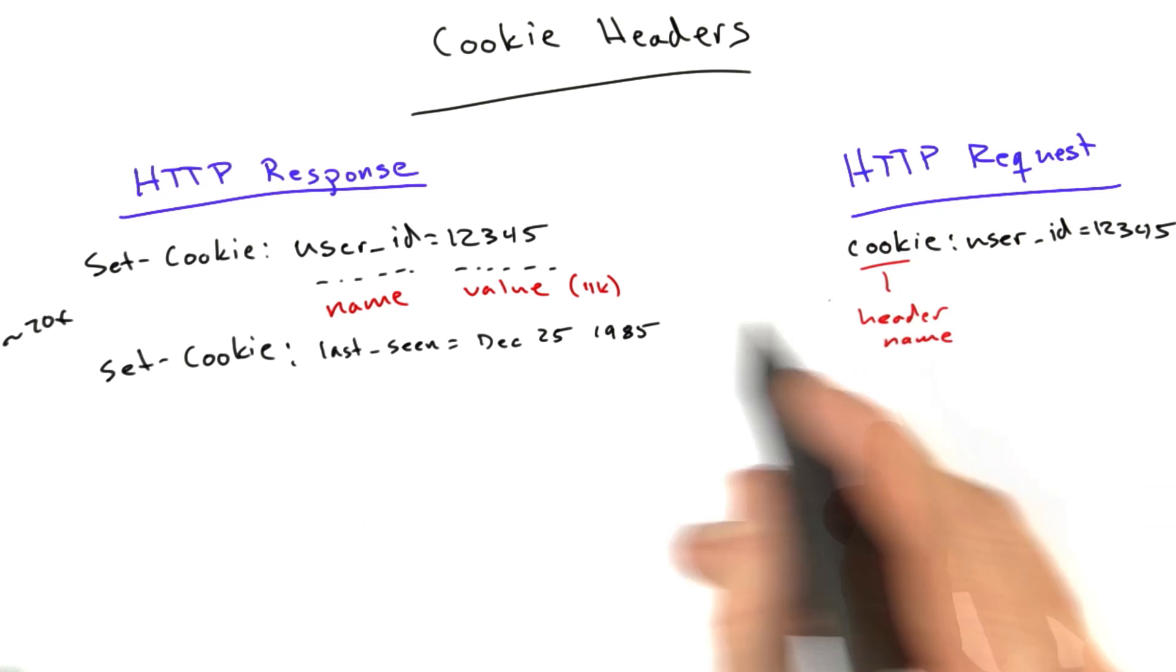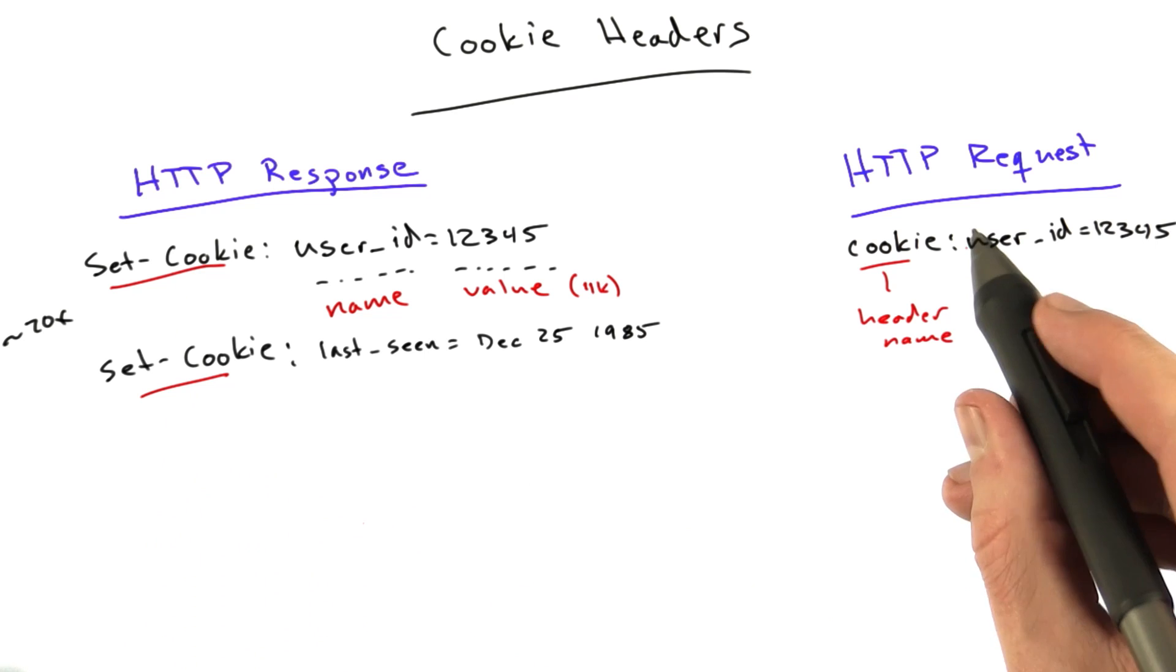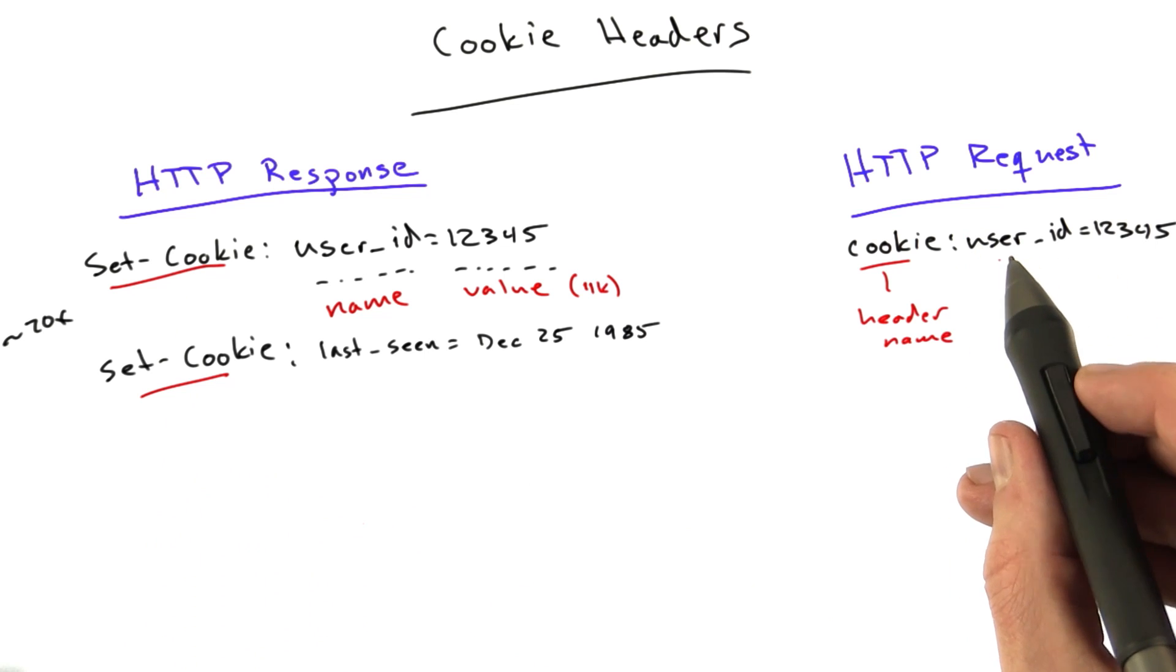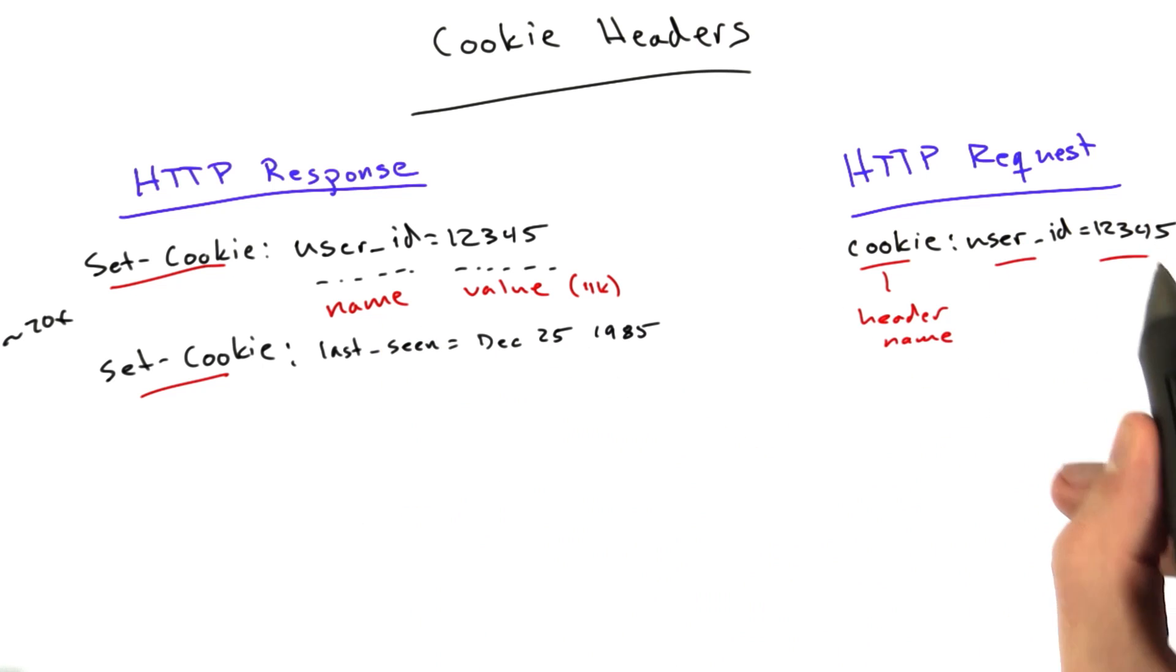This is the name of the header. And remember, this is also the name of the header. Over here is set-cookie. And then the value of the header, in this case, is user ID equals 1, 2, 3, 4, 5. Again, we have the name of the cookie and the value of the cookie.